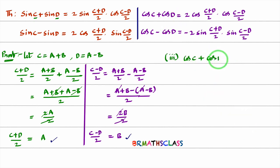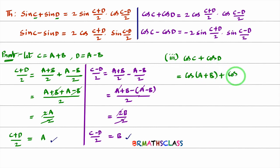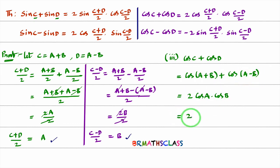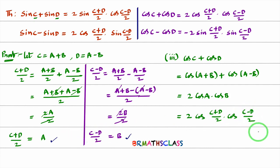Now we will prove the third result: cos C + cos D. With C as A+B and D as A−B, this becomes cos(A+B) + cos(A−B). The formula for cos(A+B) + cos(A−B) is 2 cos A · cos B. Substituting A = (C+D)/2 and B = (C−D)/2, we get cos C + cos D = 2 cos((C+D)/2) · cos((C−D)/2).